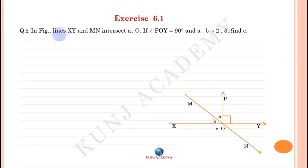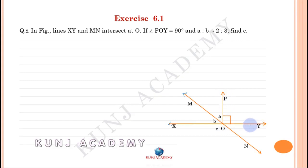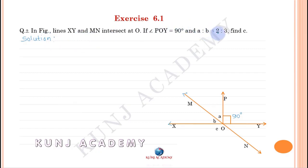In the figure, lines XY and MN intersect at O. Angle POY is equal to 90 degrees, and A ratio B is equal to 2 ratio 3. Find C.